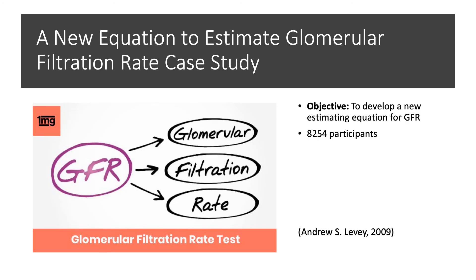Before concluding today's discussion, let's take a quick look at a case study called 'A New Equation to Estimate Glomerular Filtration Rate.' The objective was to develop a new estimated equation for the GFR, known as the Chronic Kidney Disease Epidemiology Collaboration, or CKD-EPI equation. The study used a cross-sectional analysis with separate pooled data sets for equation development and validation, and a representative sample of the U.S. population for prevalent estimates. The setting included research studies in clinical populations with measured GFRs and National Health and Nutrition Examination Surveys between 1999 and 2006.